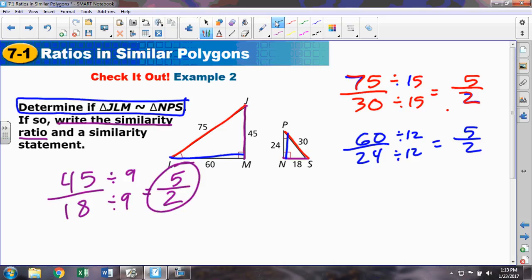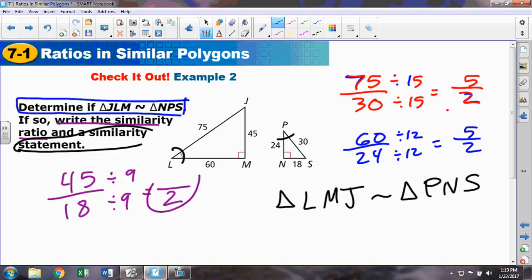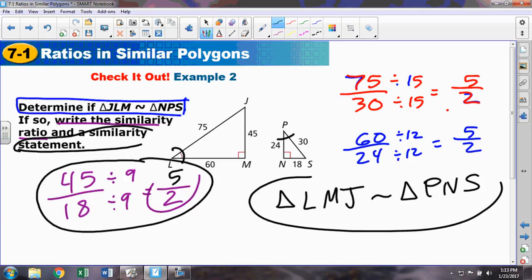Lastly, to write up the similarity statement. Triangle LMJ is similar to triangle. Well, what corresponds with L? Well, of course, we've got our tick mark here for angle L. So does angle P. 90 matches 90, which leaves our third angle. There, we're done. And again, you only needed one pair of sides and the similarity statement. We're done.